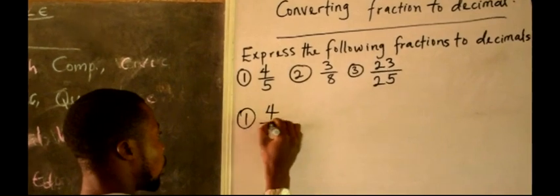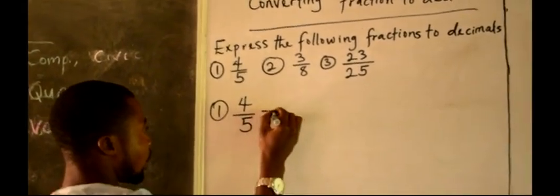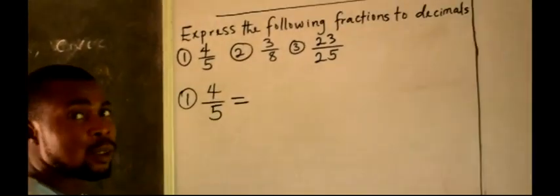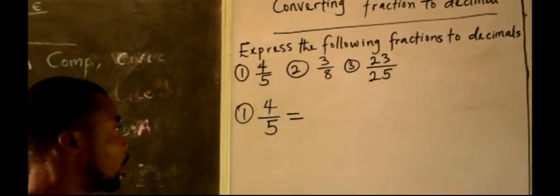Let's take this number 1. We want to express 4 over 5 as decimal.